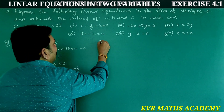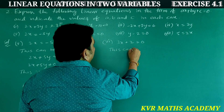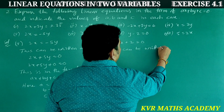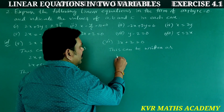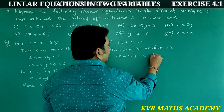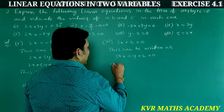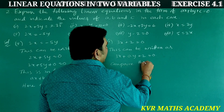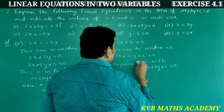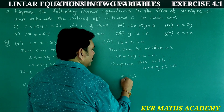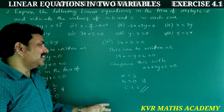Sixth: 3x + 2 = 0. Since there is no y term, this can be written as 3x + 0·y + 2 = 0. Comparing with ax + by + c = 0: a = 3, b = 0, and c = 2.